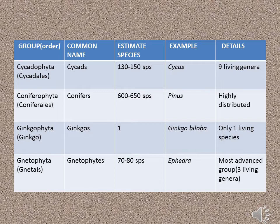Coniferophyta, also called Coniferales, have the common name Conifers. They have 600 to 650 species. An example is Pinus, and the genera are highly distributed.